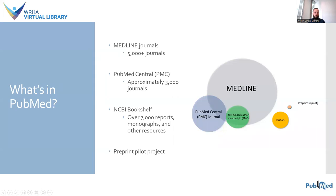To get a sense of the overall content of PubMed, here's an image representing the sources of PubMed records. A large majority of citations are from Medline journals, selected by a National Library of Medicine Advisory Committee. PubMed also includes citations for full-text articles in PubMed Central, represented by the blue circle, as well as individual articles collected in compliance with funder policies on public access, represented by the green circle.